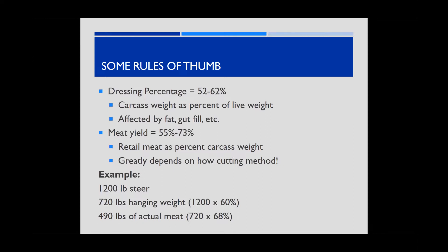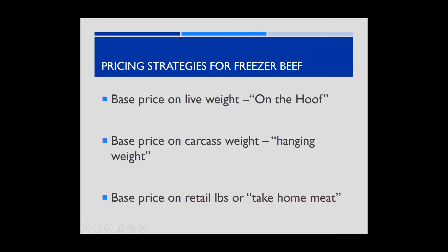Simple example: a 1,200-pound steer at 60% dress percentage yields a 720-pound carcass. At 68% meat yield, that gives 490 pounds of packaged meat. Kenny will walk through three pricing strategies: pricing on the hoof (simplest), pricing based on hanging weight (most common), and pricing based on actual take-home meat pounds, including how to incorporate processing costs.